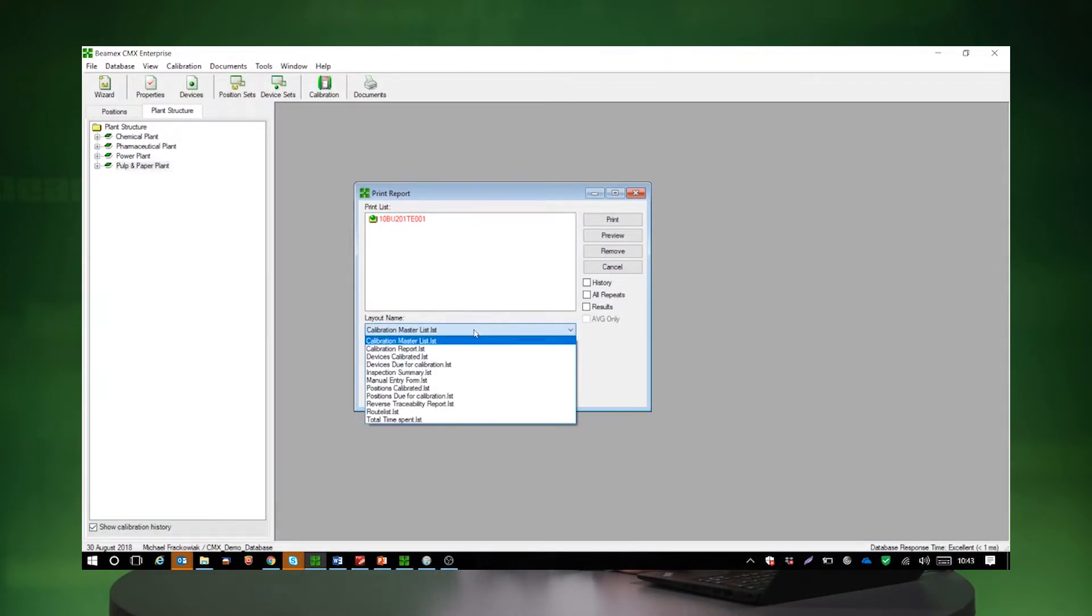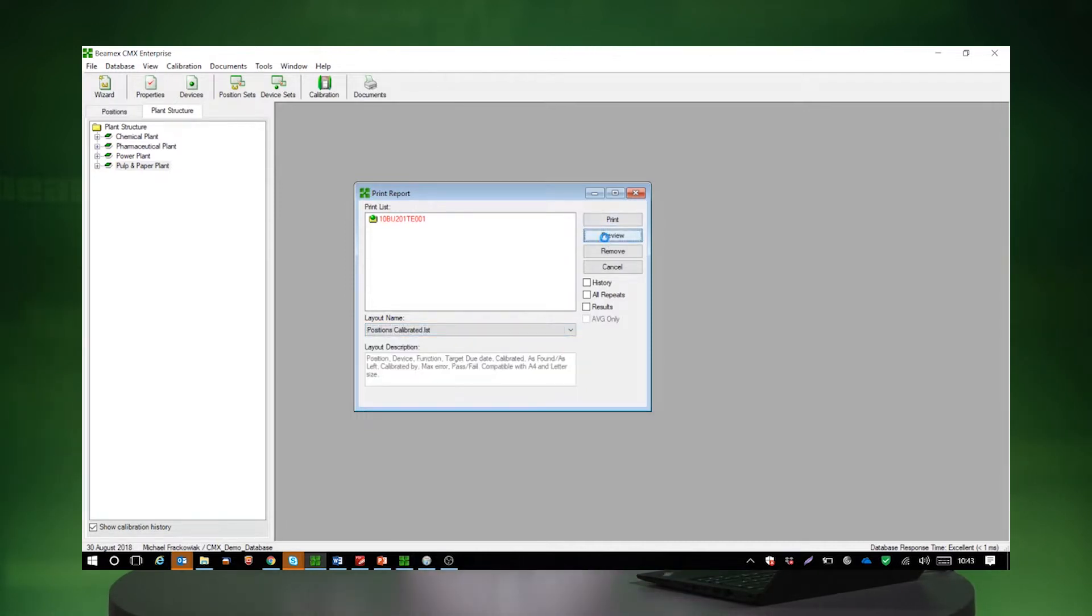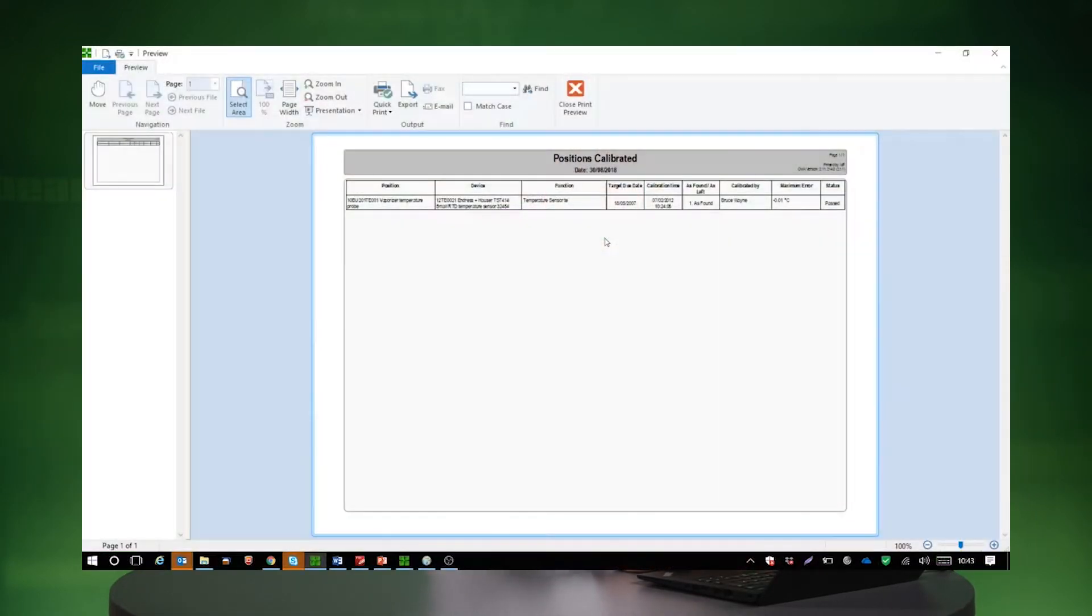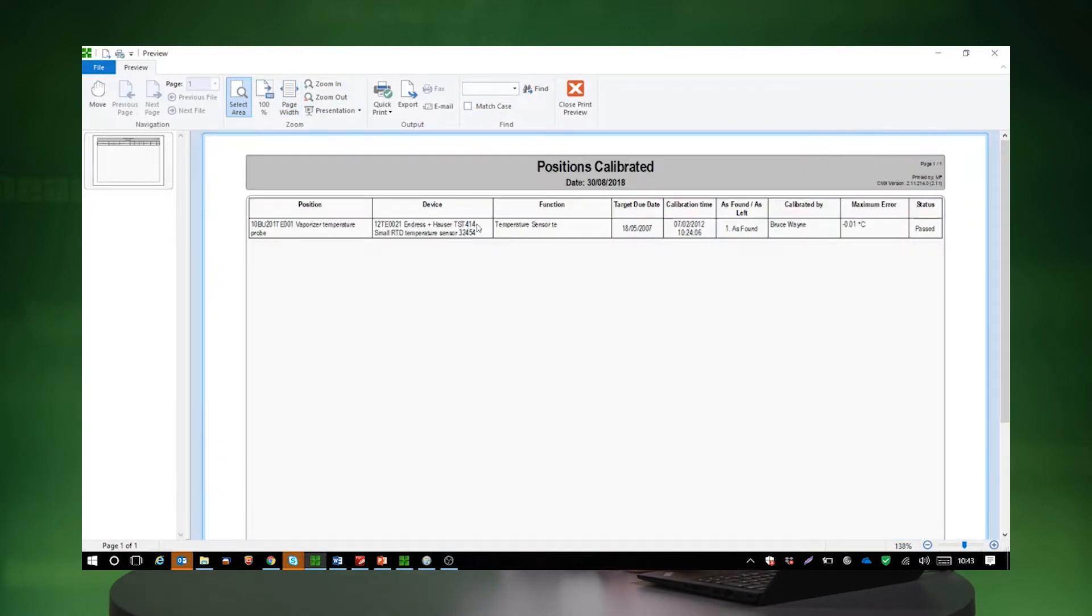The one that I was talking about was positions calibrated. So you want to see how many and what was the outcome of the positions that you've calibrated this year, this month, this particular part of a plant. You can filter the results, you can filter and play with the data to get the information in the exact format you want. Once you do that, you just drag and drop it into the box.